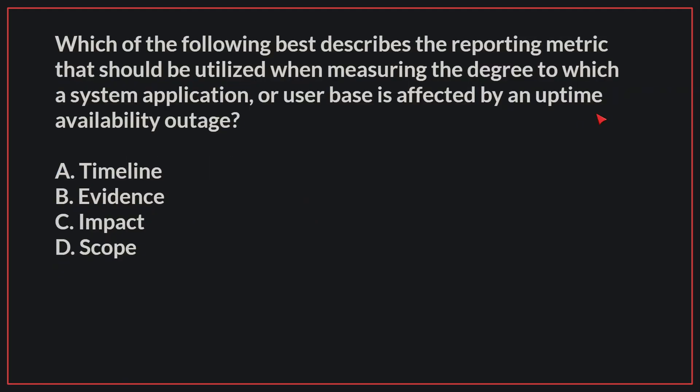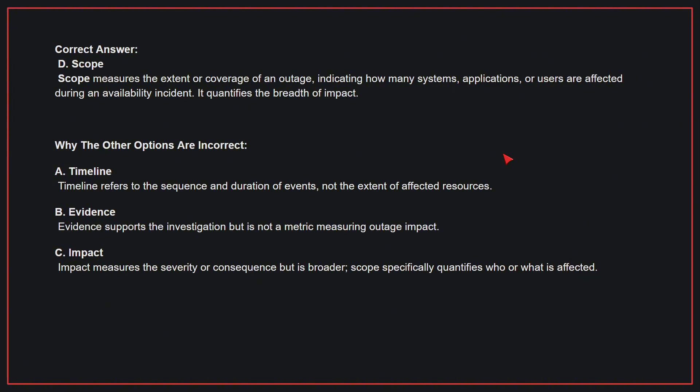Which of the following best describes the reporting metric that should be utilized when measuring the degree to which a system, application, or user base is affected by an uptime availability outage? The correct answer is D: scope. Scope measures the extent or coverage of an outage, indicating how many systems, applications, or users are affected during an availability incident. It quantifies the breadth of impact.